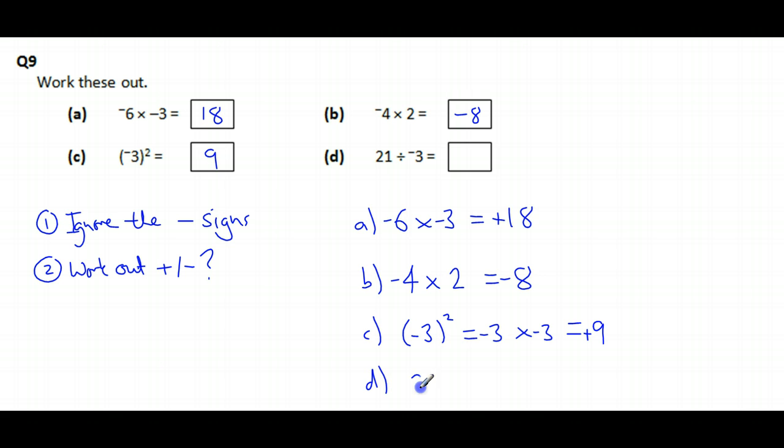Last one. Let's look at 21 divided by... Well, let's do 3 first of all. We know the answer is going to be 7. So 21 divided by minus 3 just means we put a negative in the answer. Minus 7. And then we're done.